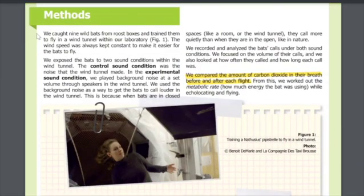Methods: We caught nine wild bats from roost boxes and trained them to fly in a wind tunnel within our laboratory. The wind speed was always kept constant to make it easier for the bats to fly. Here in Figure 1, we can see training a Nathusius' pipistrelle to fly in a wind tunnel.